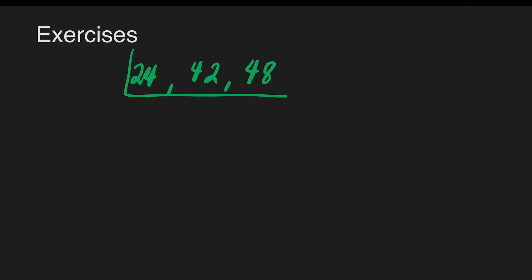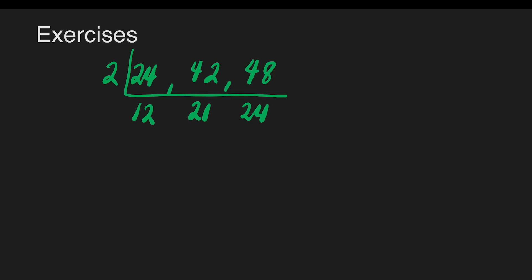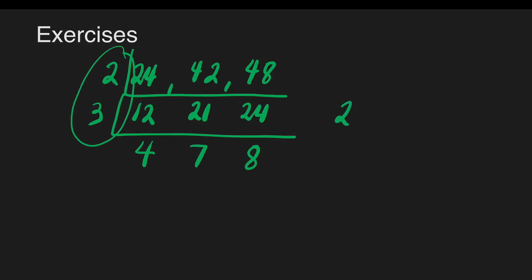Another one: 24, 42, and 48. Using the continuous division method, what number can we divide 24, 42, and 48? We'll start with 2. 24 divided by 2 is 12, 42 divided by 2 is 21, and 48 divided by 2 is 24. Next, what number can we divide 12, 21, and 24? Yes, we have 3. 12 divided by 3 is 4, 21 divided by 3 is 7, and 24 divided by 3 is 8. There is no number that can divide all of 4, 7, and 8. So 2 times 3 is equal to 6. The GCF of 24, 42, and 48 is 6.